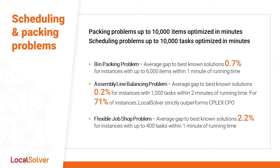LocalSolver 10.5 also comes with improvements on packing and scheduling problems. Instances with up to 10,000 items or tasks are optimized in minutes. On the bin packing problem, the average gap to the best-known solution is 0.7% for instances with up to 5,000 items within 1 minute of running time. On the assembly line balancing problem, the average gap to the best-known solution is 0.2% for instances of 1,000 tasks within 2 minutes of running time. For 71% of those instances, LocalSolver strictly outperforms CPLEX CPO.